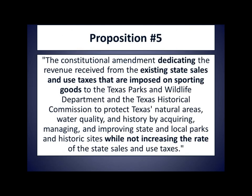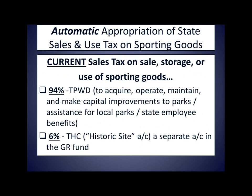Proposition 5: 'The constitutional amendment dedicating the revenue received from the existing state sales and use taxes imposed on sporting goods to the Texas Parks and Wildlife Department and the Texas Historical Commission to protect Texas natural areas, water quality, and history by acquiring, managing, and improving state and local parks and historic sites, while not increasing the rate of the state sales and use taxes.' Currently, the Texas Tax Code already requires 94% of the sporting goods tax proceeds to be credited to the Texas Parks and Wildlife Department, while 6% is credited to the Texas Historical Commission. But reportedly, not all of the generated taxes have been appropriated this way.